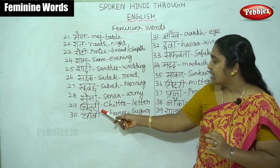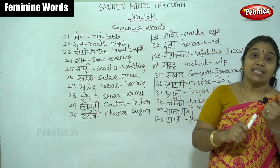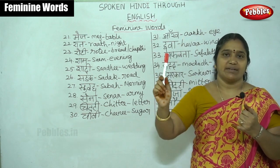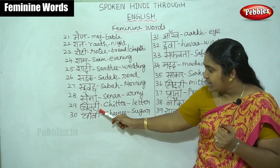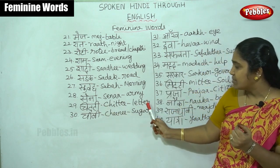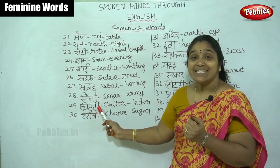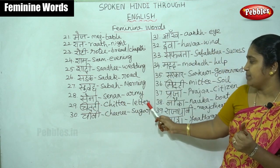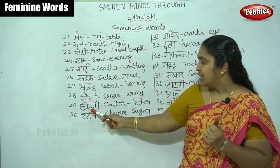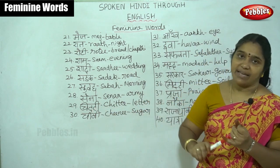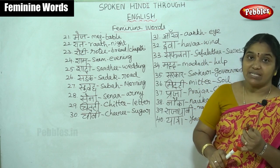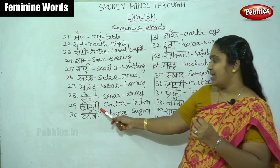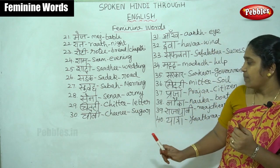Then 'chitti'. Chitti means letter. Note that 'khat' also means letter, but khat comes under masculine gender, while chitti — ending with the 'i' sound — comes under feminine. Meri pitaji chitti likh rahe hain — my father is writing a letter.